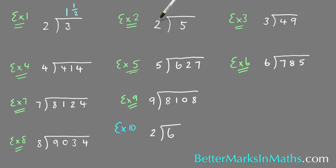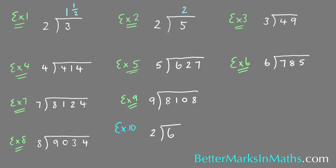In example 2, how many 2s in 5? There's 2 and there's 1 left over. So 2 remainder 1, except I don't want to write it as a remainder — I want to write it as a fraction, so it's going to be 1 over 2.